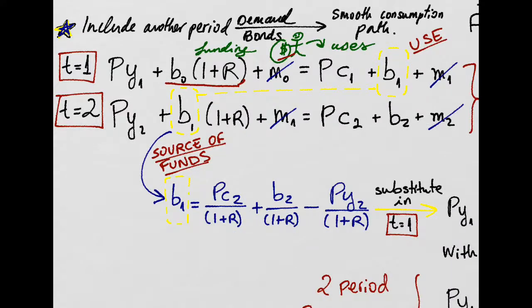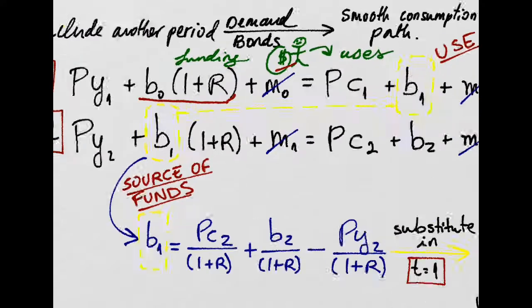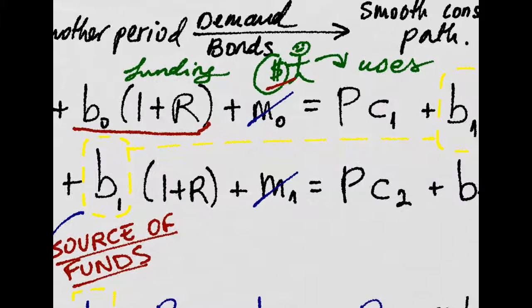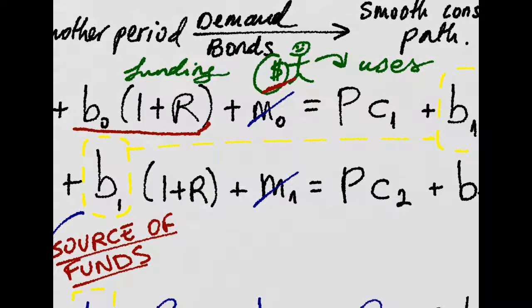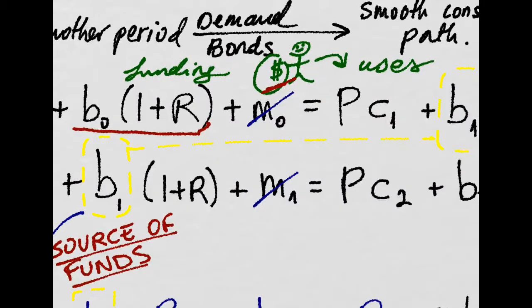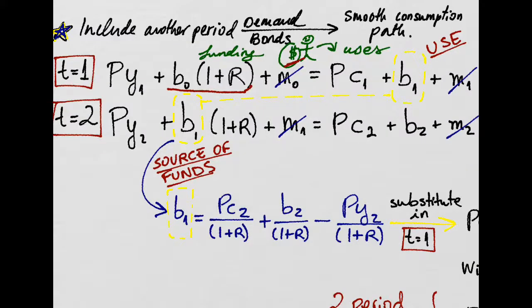So we have a budget constraint for each of the two periods, and that's just how our representative guy gets funding and how he uses that funding. So if we make money constant,